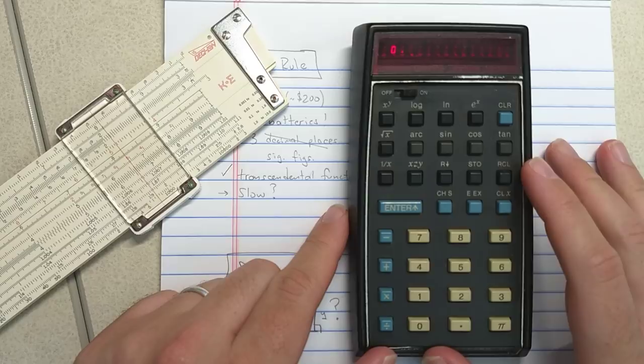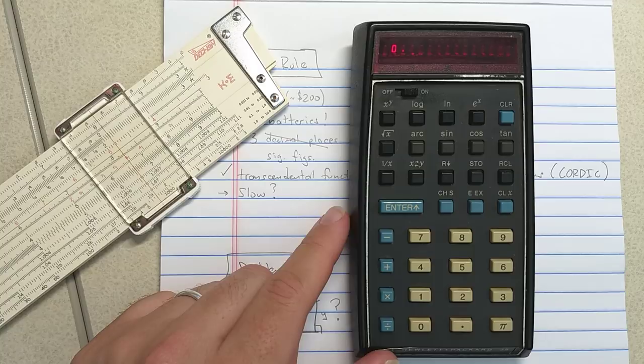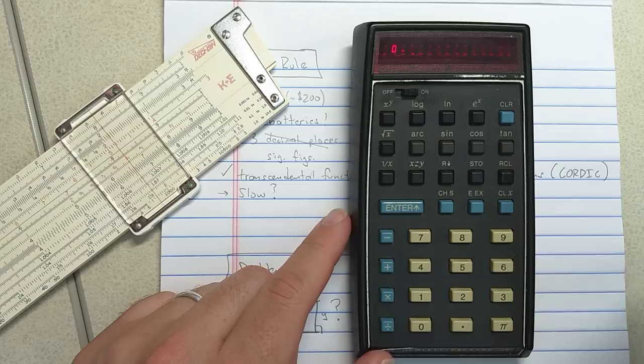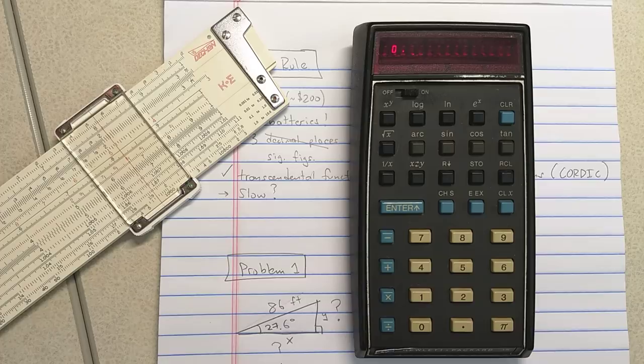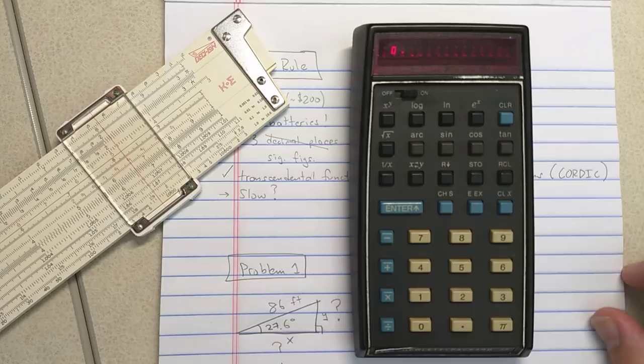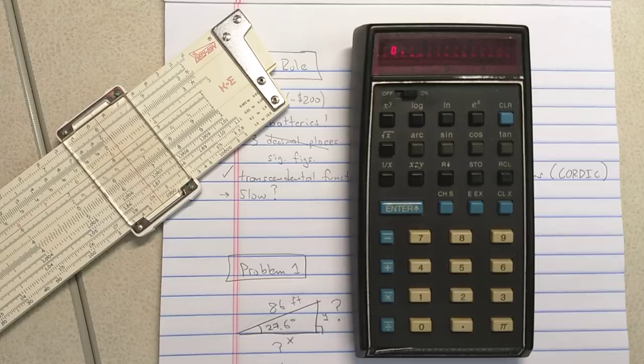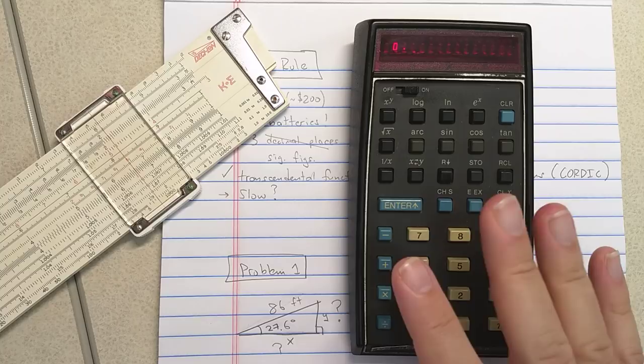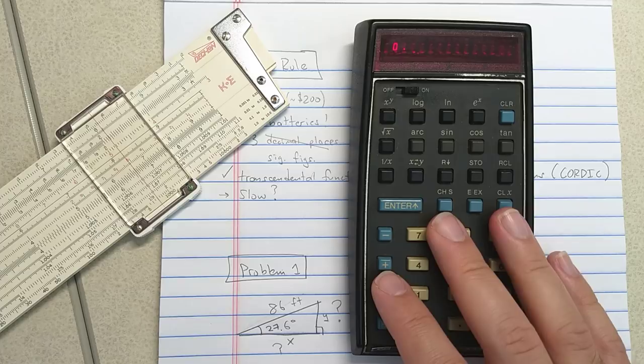Before 1972, there are pocket calculators out there that can compute the four basic functions of addition, subtraction, multiplication, division. Some of them can do square roots. Texas Instruments is a player. But the HP-35 is really the first pocket scientific calculator. The advancement is an algorithm called Cortic is used to implement the trigonometric and logarithmic functions. And that's really what makes it possible to do with such limited computing power inside the integrated circuits on this thing.